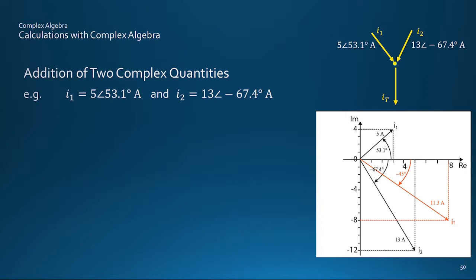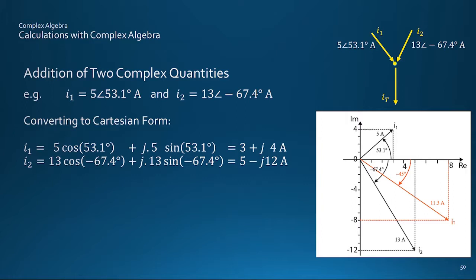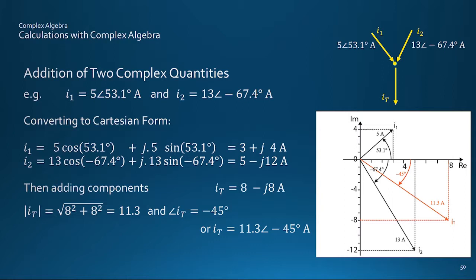Adding the real and imaginary parts then gives the total of 8 minus j8, which can then, if necessary, convert it back into polar form using the Pythagoras and Tan formulae. Works quicker with the calculator.